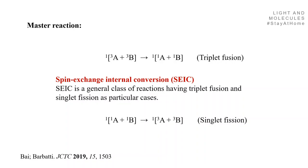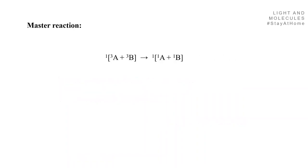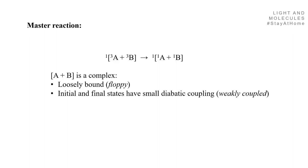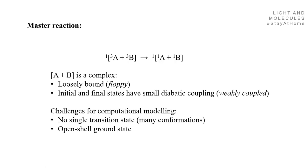In the case of singlet fission, what we have is the A and B monomers becoming triplets. From this master reaction, we have A and B forming a complex that is loosely bound — for this reason it's floppy. It has initial and final states with very small diabatic coupling, so it's a weakly coupled complex. It's a challenge for computational modeling: there's no single transition state, it has many conformations, and it has an open-shell ground state.